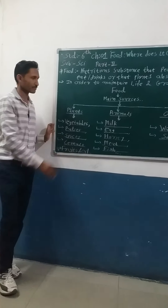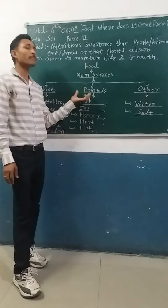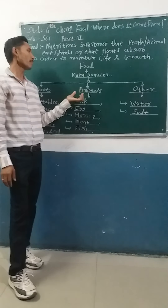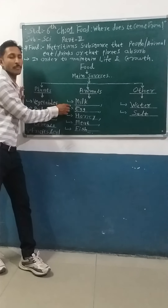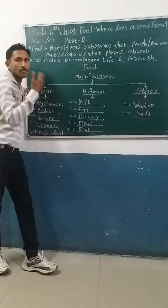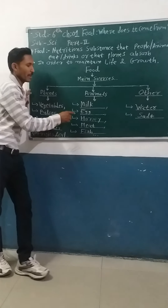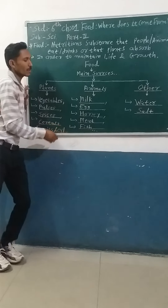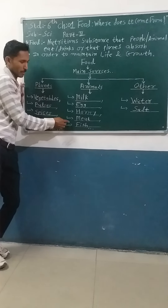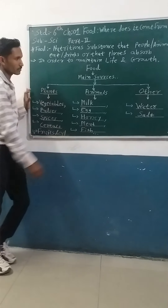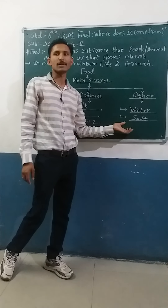And oil. From animals, we get milk, eggs, and honey. Honey is also important for medicine. We also get meat and fish. From other sources, we get water and salt.